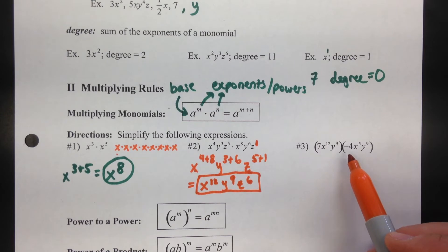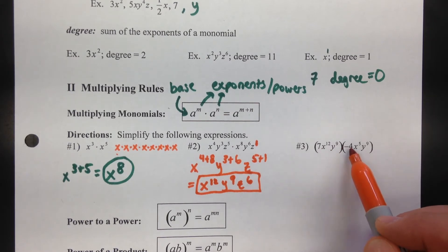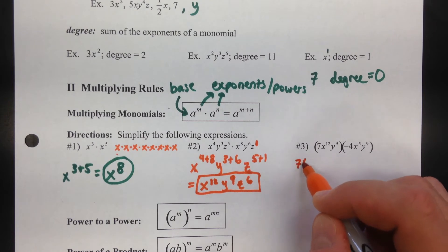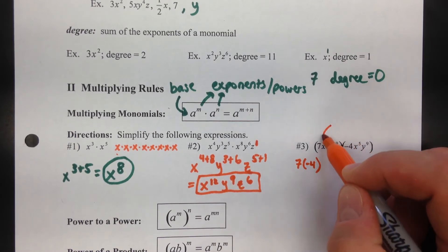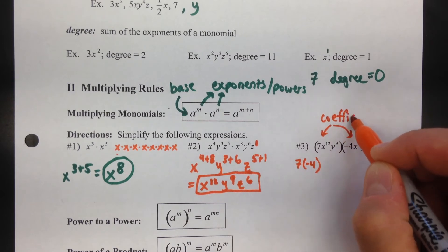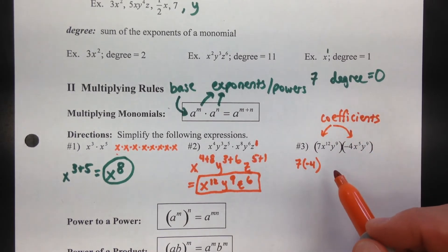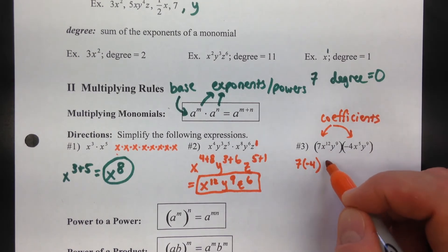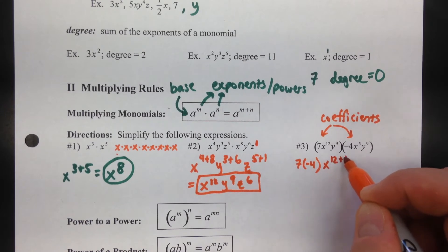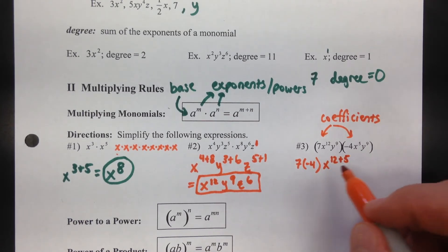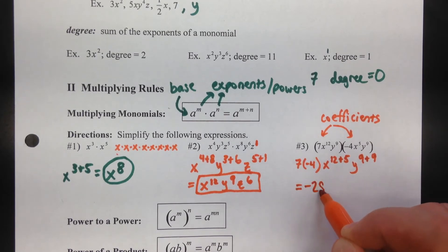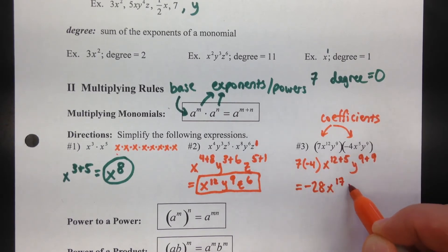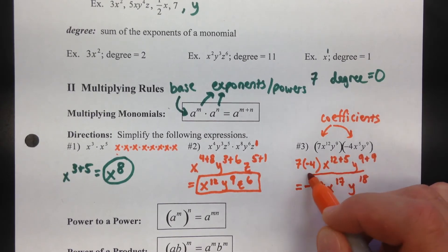For example 3, we can use the commutative property of multiplication. Multiply the coefficients — the numbers that multiply the variables — together: 7 times negative 4. For the variables, x to the twelfth times x to the fifth means add the exponents, and y to the ninth times y to the ninth gives y to the eighteenth. So the answer is negative 28 x to the 17th y to the 18th.